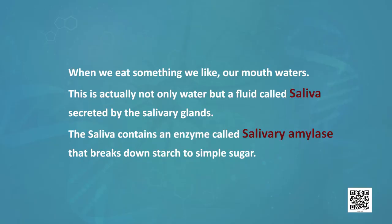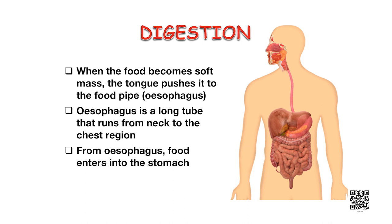When we eat something we like, our mouth waters. This is actually a fluid called saliva secreted by the salivary glands. The saliva contains an enzyme called salivary amylase that breaks down starch to simple sugar. When the food becomes a soft mass, the tongue pushes it to the food pipe or esophagus that runs from the neck to the chest region. From the food pipe, food enters the stomach. The lining of the digestive canal has muscles that contract rhythmically in order to push the food forward. These peristaltic movements occur all along the gut.